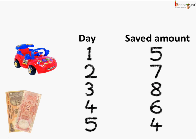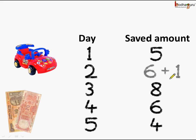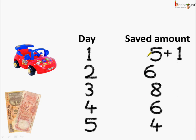Now let's see how he saved. On the first day he saved rupees 5, which is 1 less than the 6 rupees he would need to save if saving equally each day. The next day he saved rupees 7 — he saved 1 rupee extra than required, making up for the 1 rupee he saved less on the first day.